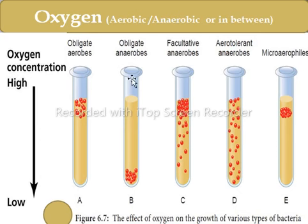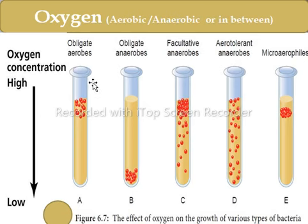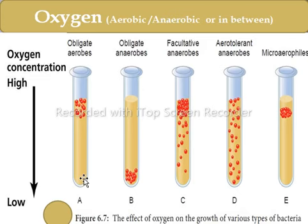Then we have another factor affecting bacterial growth: oxygen. Bacteria may be aerobic, anaerobic, or in-between — that is, obligate, facultative, aerotolerant, microaerophilic, etc. Number one is obligate aerobes. These are bacteria that strictly require oxygen for their growth; they only grow in the presence of oxygen and do not grow in its absence. Examples of obligate aerobes are Staphylococcus species. Then we have obligate anaerobes, which are bacteria that do not require oxygen for their growth. An example of obligate anaerobes is Clostridium species.